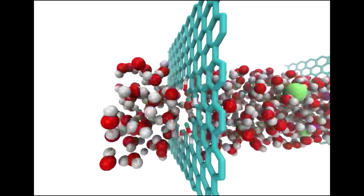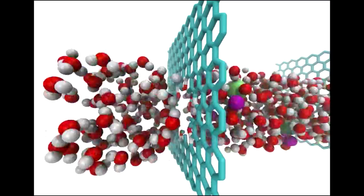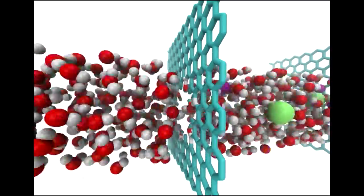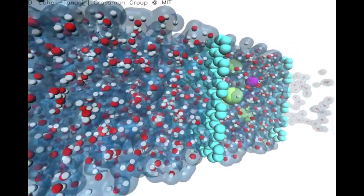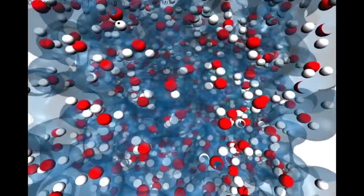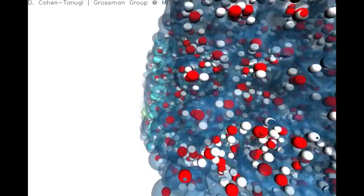Using a computational tool called molecular dynamics, we've modeled the behavior of salt water flowing across graphene membranes at the atomic scale. Our simulations show that graphene could let water through at more than a hundred times the permeability of existing membranes while still rejecting salt.